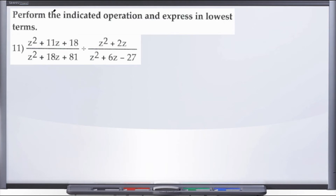All right, so we're cruising along here — number 11. We're still performing the indicated operation and expressing in lowest terms. Go ahead and take each numerator and denominator, factor as much as you can, cross out and cancel the common factors, then perform the indicated operation. Be careful — we're dividing, so we'll be changing from division to multiplication and flipping the second fraction. I like to factor all numerators and denominators before I flip.